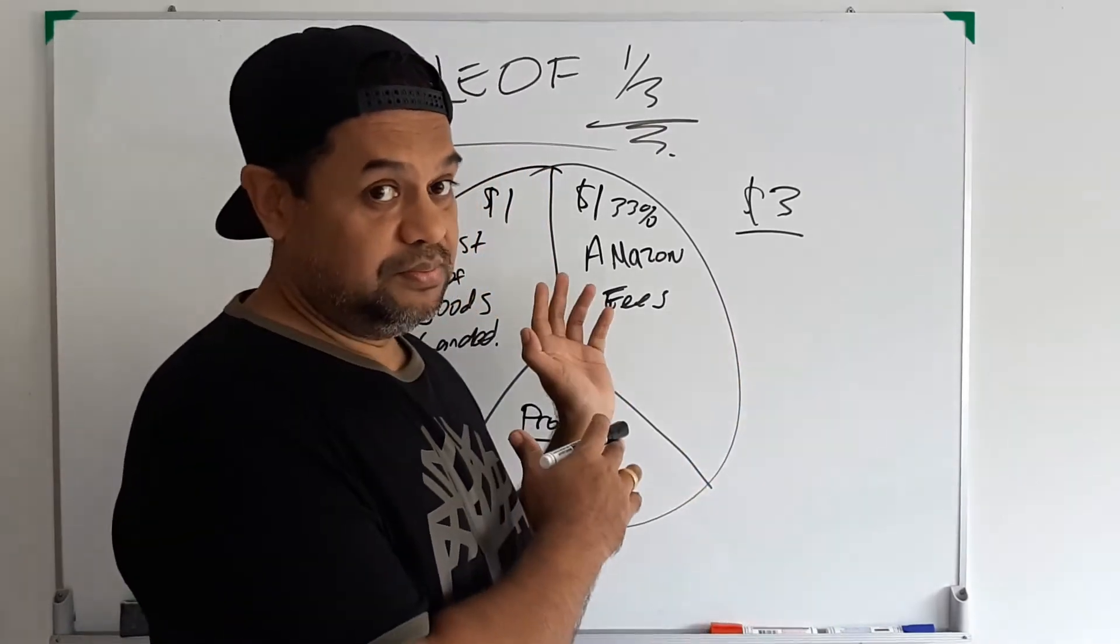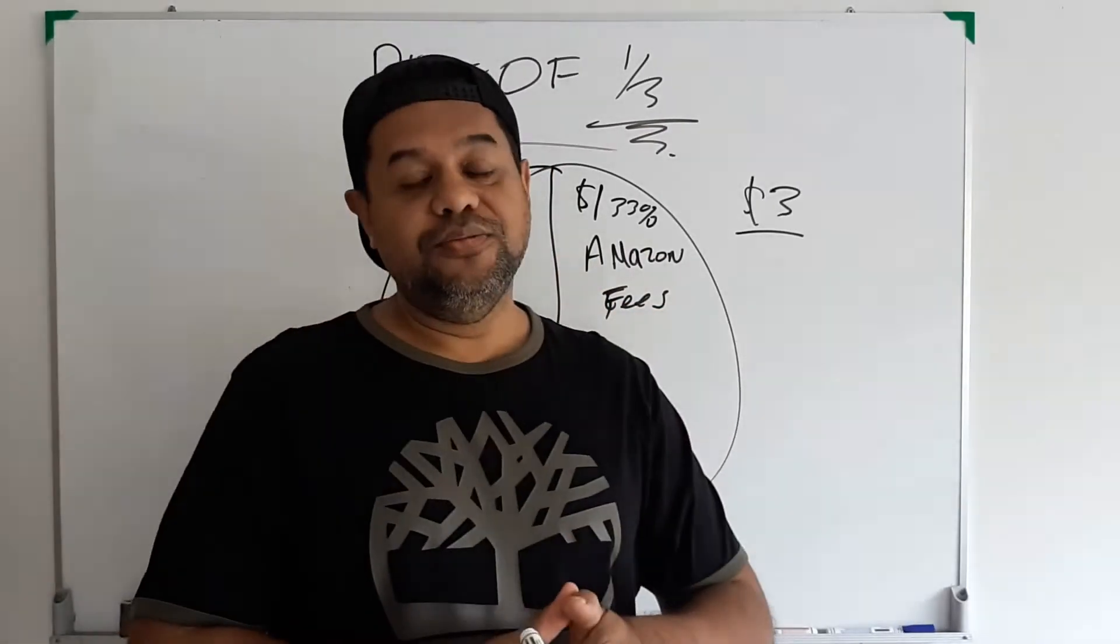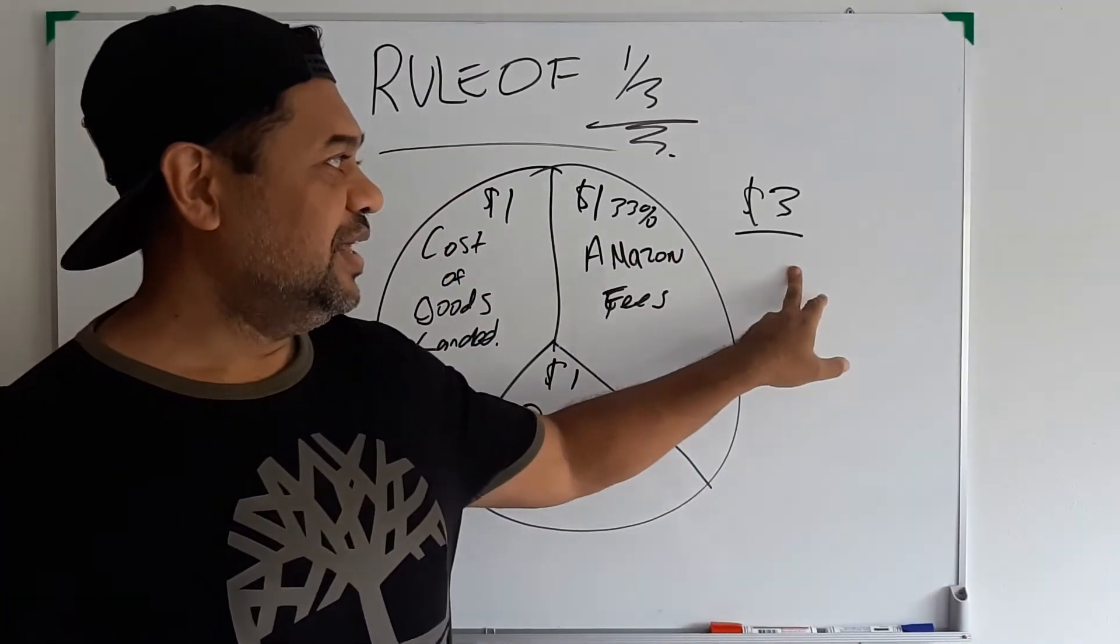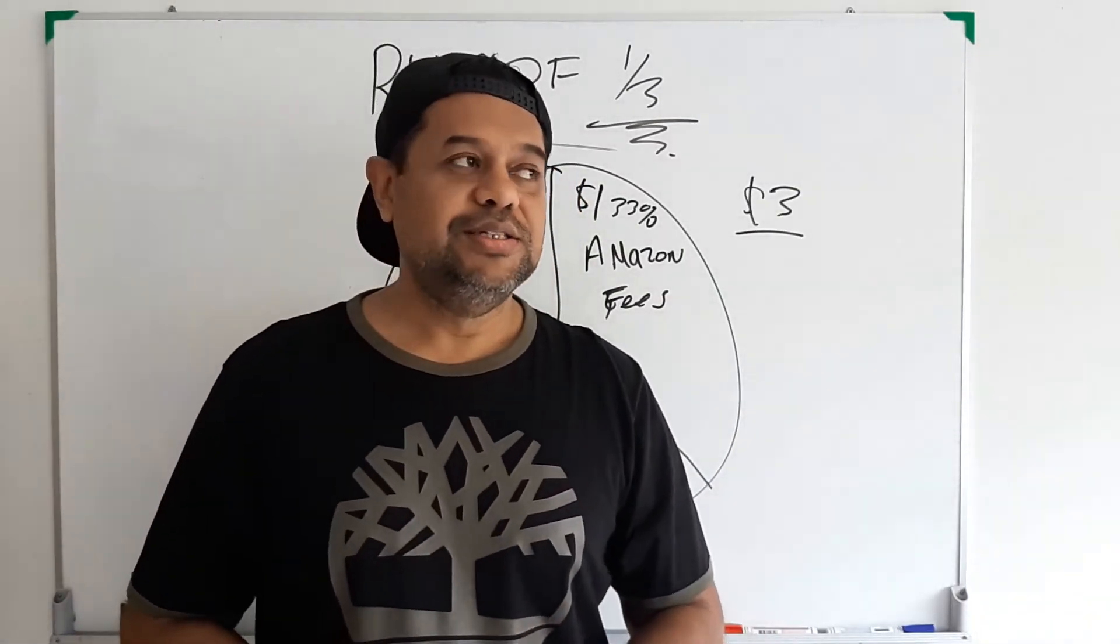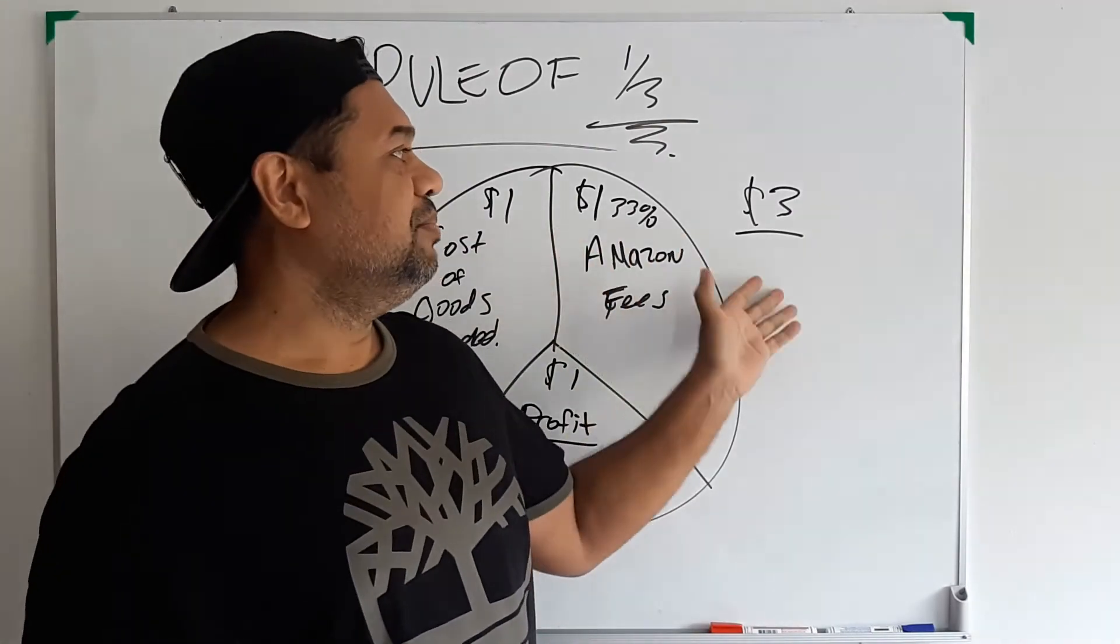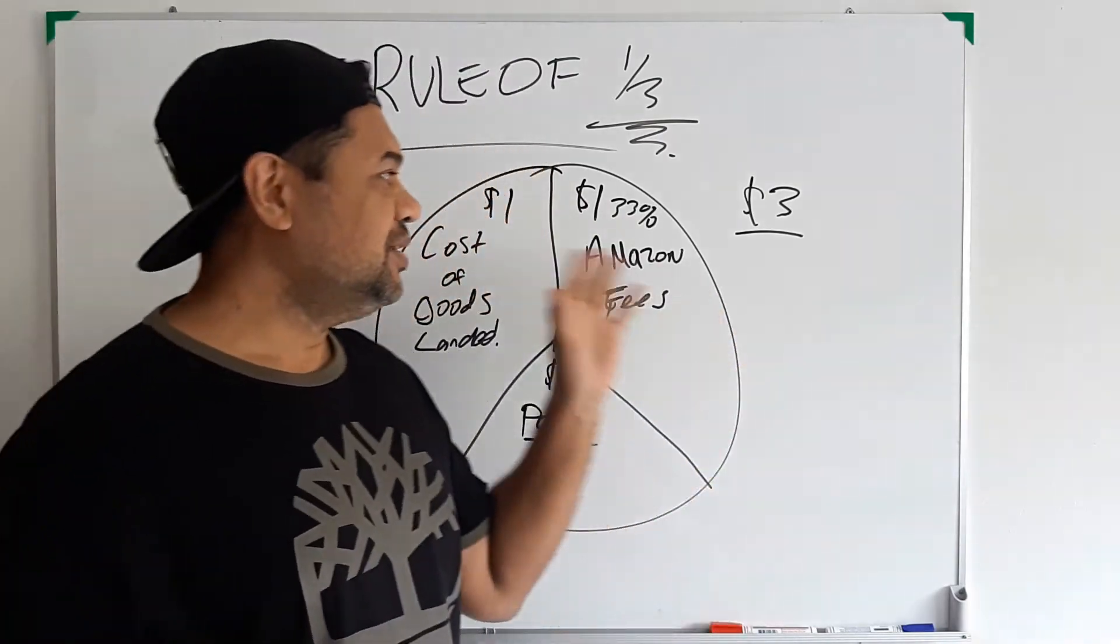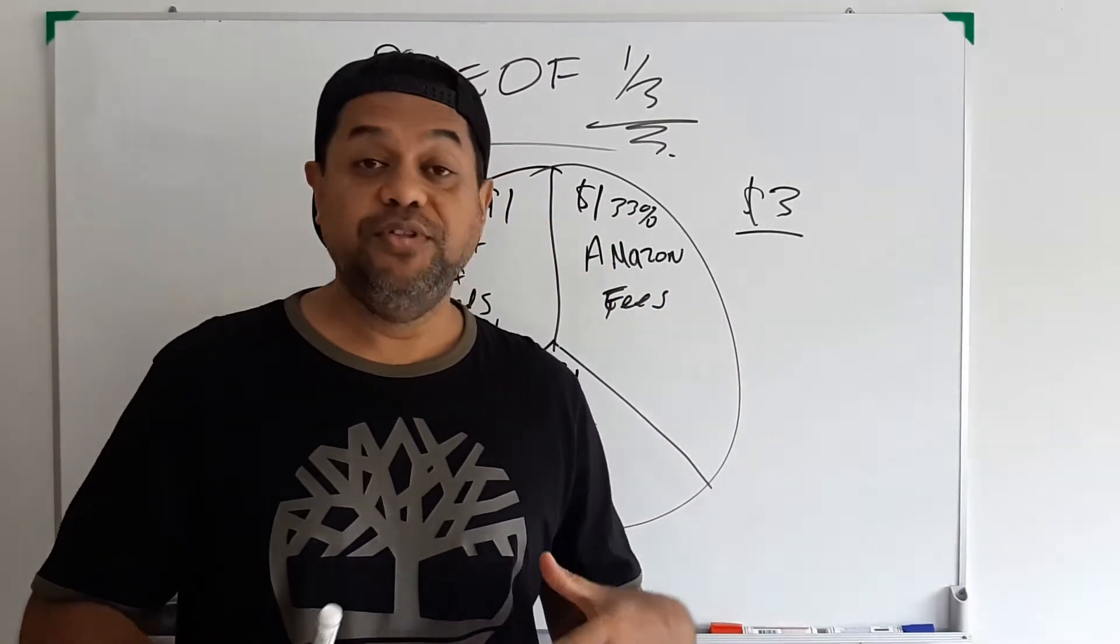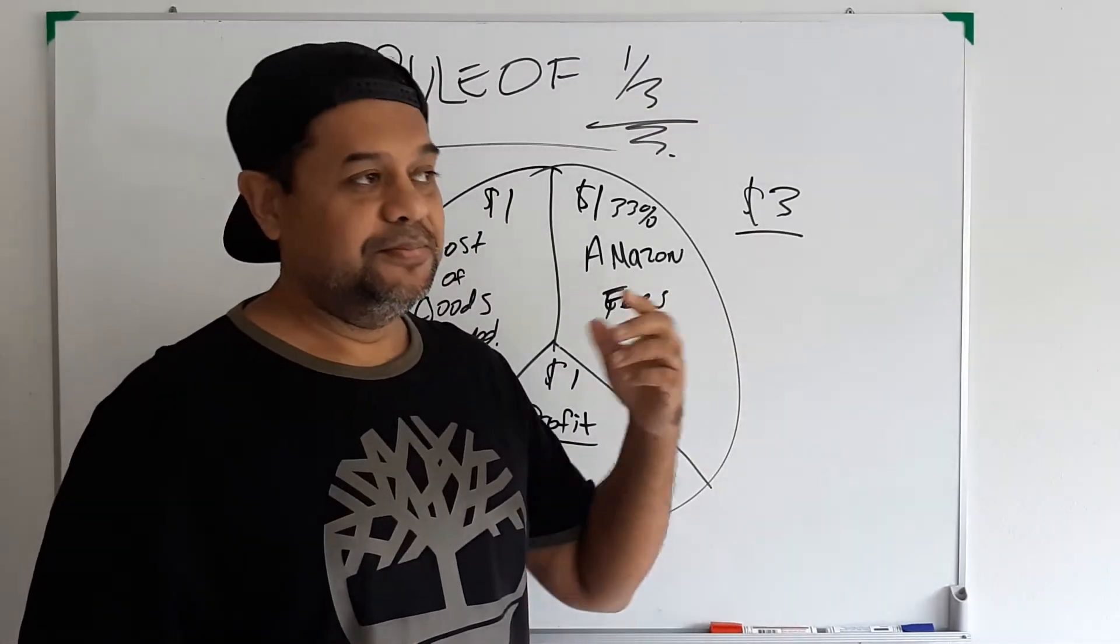Then you're going to have to allot one dollar for the Amazon fees and that's your profit. That's basically how you do it. If you don't follow this rule you're going to go broke. So the challenge is to find products that you can basically buy for one dollar landed and sell for three dollars. This equation could be anything, it doesn't have to be one dollar. It could be five dollars, it could be ten dollars.